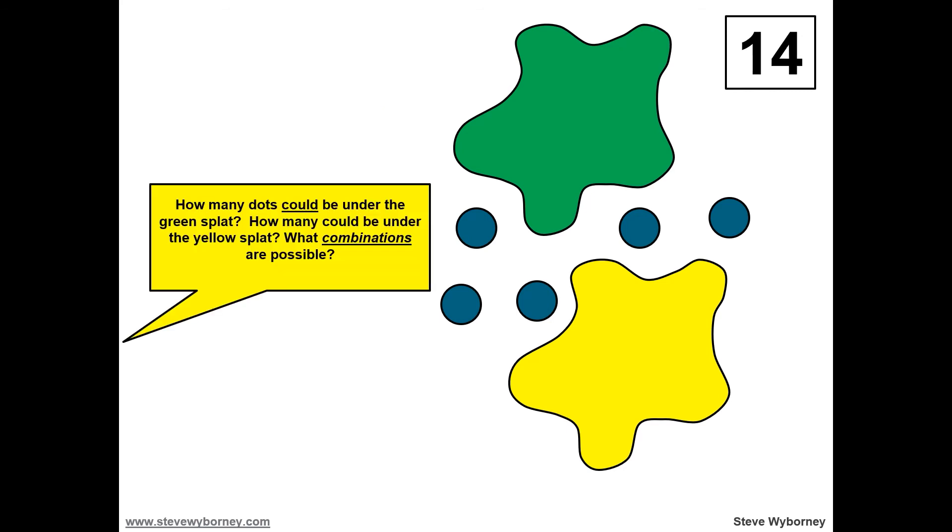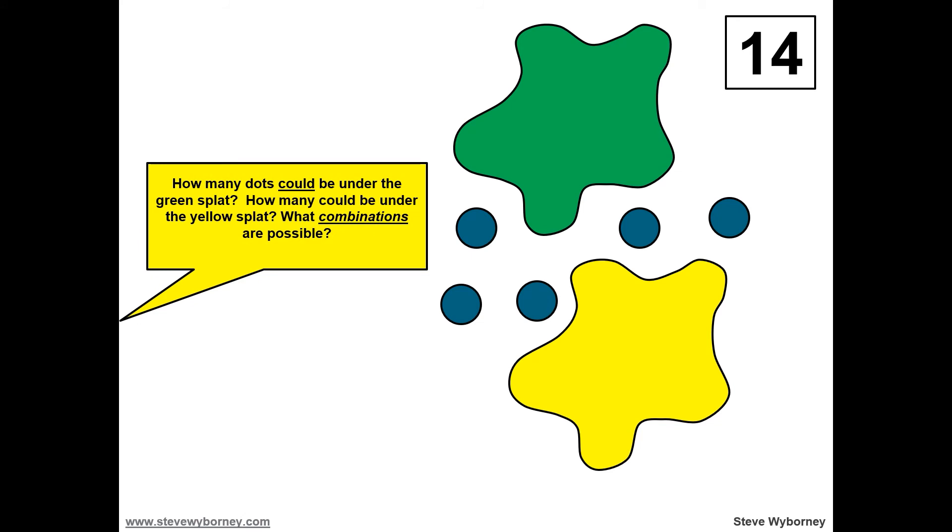There are nine dots between the yellow and green splats. What combinations are possible? Think about all the ways to make nine.